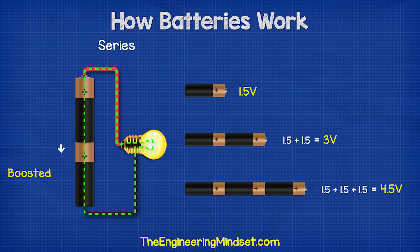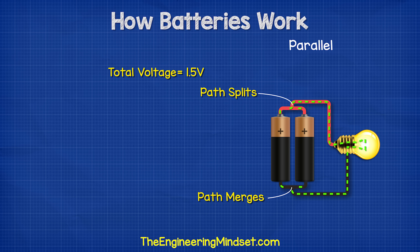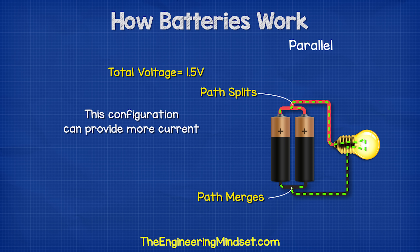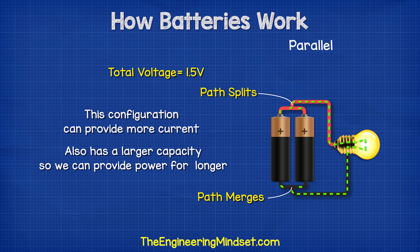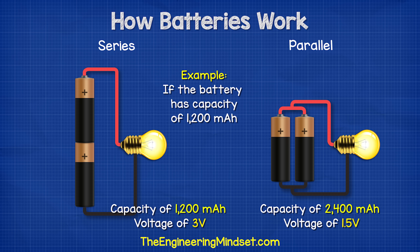The voltage increases because each battery boosts the electrons that enter it, giving a higher voltage. If we connect batteries in parallel, we only get 1.5 volts regardless of how many we connect, because the electrons are not boosted. However, a parallel configuration can provide more current and has a larger capacity, so we can power something for longer. For example, if a battery has a capacity of 1200 milliamp-hours and we place two in parallel, we get 2400 milliamp-hours but still only 1.5 volts. Wired in series, we have 1200 milliamp-hours but 3 volts.